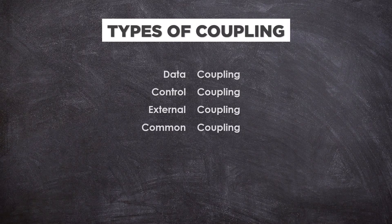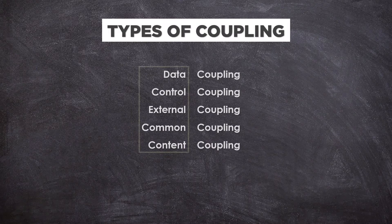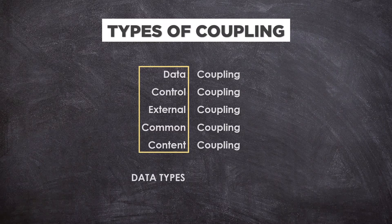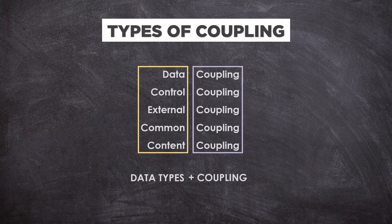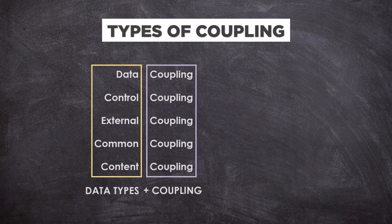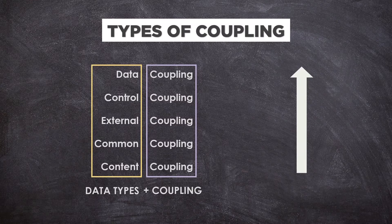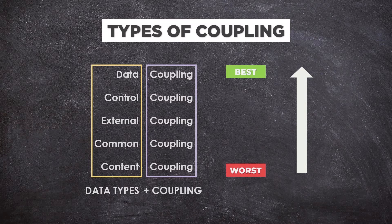There are five types of coupling: data coupling, control coupling, external coupling, common coupling, and content coupling. If these types of data are shared with modules, they will be called by their respective names by adding 'coupling' after that. The arrangement goes from worst to best coupling, where the worst is content coupling and the best is data coupling.